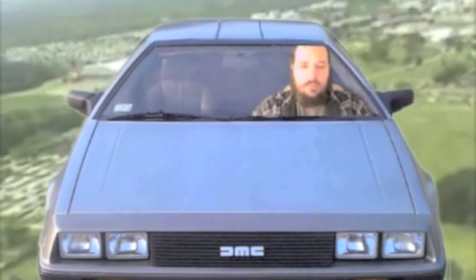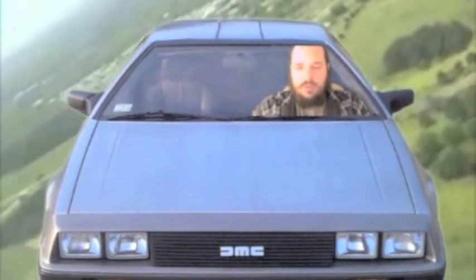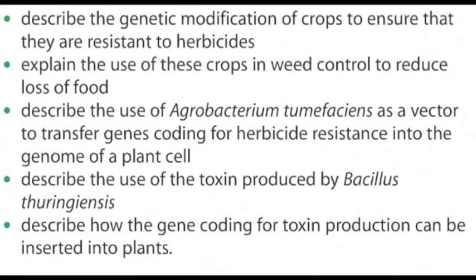Lesson number six: Genetically Modified Plants. By the end of this lesson you should be able to describe the genetic modification of crops to ensure they are resistant to herbicides, explain the use of these crops in weed control to reduce food loss, describe the use of Agrobacterium tumefaciens as a vector to transfer genes coding for herbicide resistance into the genome of a plant cell, and describe the toxin produced by Bacillus thuringiensis and how the gene coding for its production can be inserted into plants.